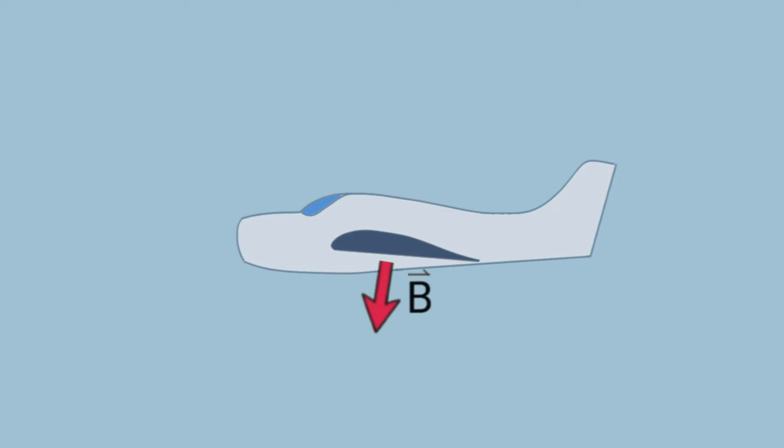Vector B is the change in velocity of the airflow directed downwards. Vector B is the action, and the equal and opposite reaction is the force upwards that we call lift. So it's the same law of physics that accelerates a rocket. It's Newton's third law of motion.